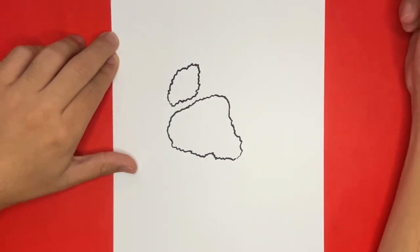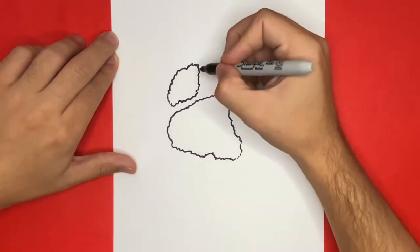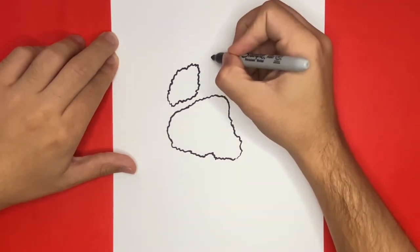Now we have to draw three more toes. But when we draw our next two toes we have to be careful because if they're too big they might take up too much space and not leave enough space for the fourth toe.